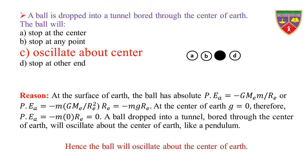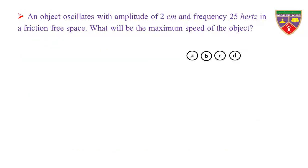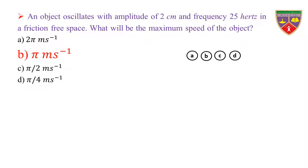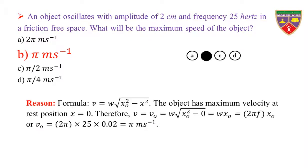An object oscillates with amplitude of 2 cm and frequency 25 Hz in a friction-free space. What will be the maximum speed of the object? Option A: 2π m/s. Option B: π m/s. Option C: π/2 m/s. Option D: π/4 m/s. The key is π m/s. Therefore, the correct option is B.